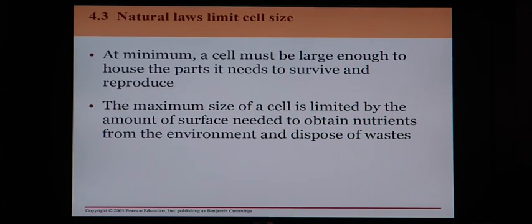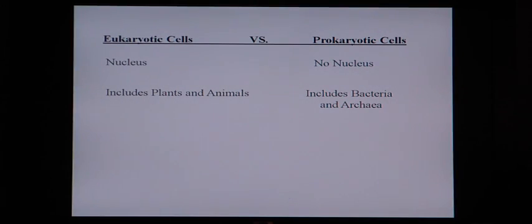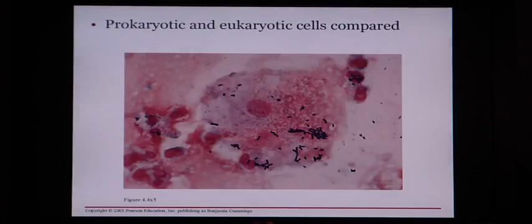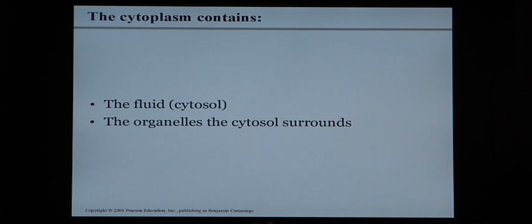At minimum, a cell must be big enough to house the parts it needs to survive and reproduce. There are two kinds of cells: prokaryotic and eukaryotic. Prokaryotic cells are small, simple, and do not have a nucleus — they include bacteria and archaea and are very, very small, simple cells.